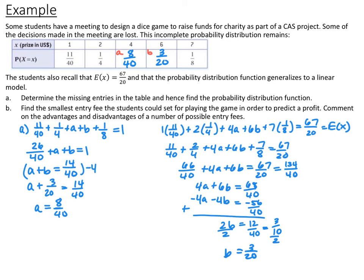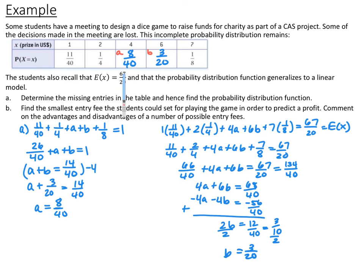Solving the system using elimination: simplifying gives A + B = 14/40 and 4A + 6B = 68/40. Multiplying the first equation by −4 and adding eliminates A, giving 2B = 12/40, so B = 3/20. Substituting back gives A = 8/40. Therefore, the probability for $4 is 8/40 and for $6 is 3/20.